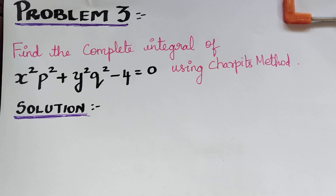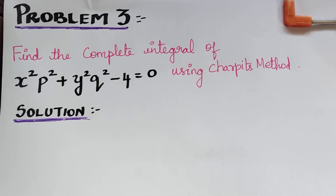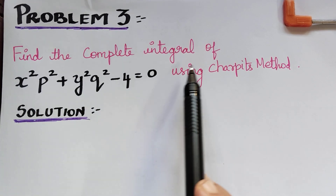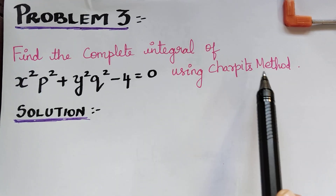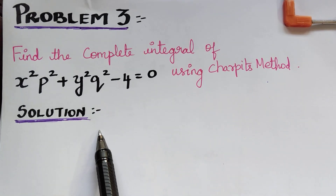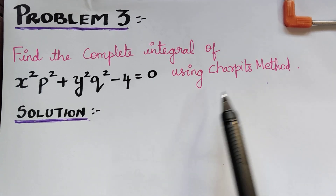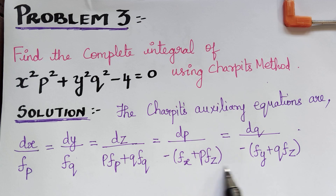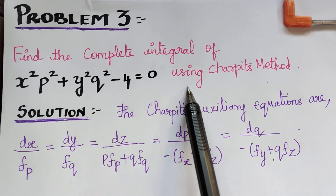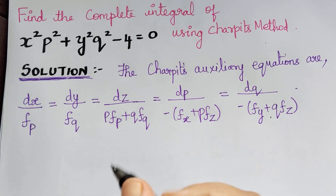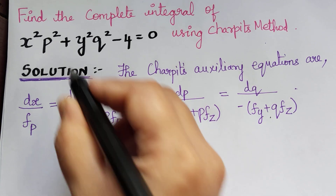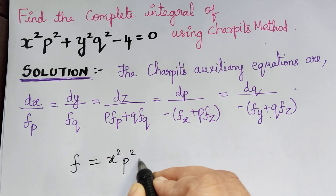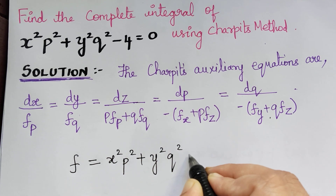Dear students, under the topic non-linear partial differential equations, we are solving problems using Charpit's method. We have a question which says: find the complete integral of the given PDE using Charpit's method. We shall write the auxiliary equations under Charpit's method. Let F be equal to x²p² + y²q² - 4 = 0.